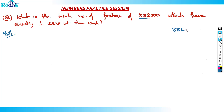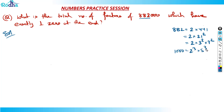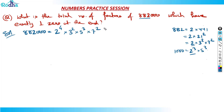So 882 should be factorized fast: it's 2 × 441, which is 2 × 21², which is 2 × 3² × 7². And for the thousand part — 1000 = 2³ × 5³. So 882000 = 2⁴ × 3² × 5³ × 7². That is the prime factorization of 882000.